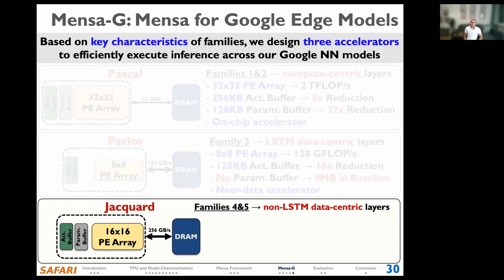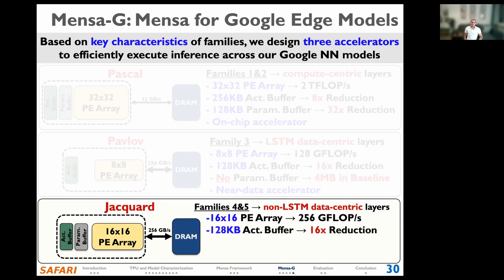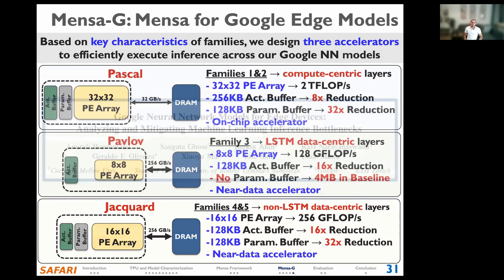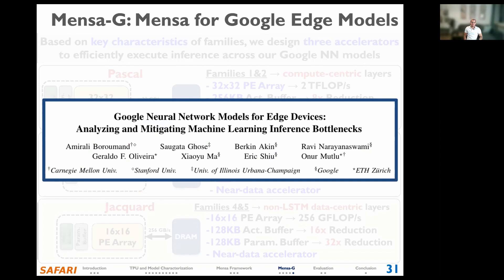Finally, we have Jackport, which caters to layers in families four and five — primarily non-LSTM data-centric layers. While layers in families four and five have low MAC intensity, they perform more MAC operations on average than family three layers, so we select a 16x16 processing element array. We use a 128 KB buffer for activations and a 128 KB buffer for parameters in Jackport. Similar to Pavlov, we place Jackport inside the memory due to the high memory bandwidth demands of these layers. We invite you to check our paper for more details on the accelerator designs and specialized dataflows.